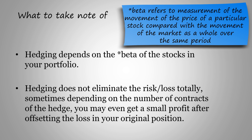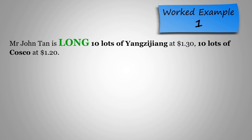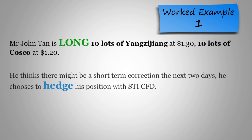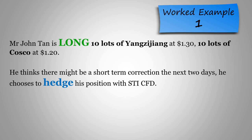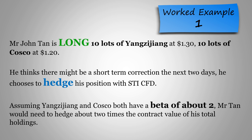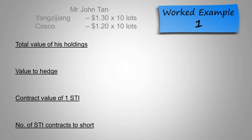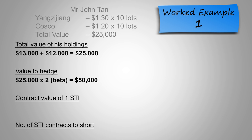Now, let us go through a few worked examples to show how hedging works in different situations. First, let's look at Mr. John Tan. Mr. John Tan is long 10 lots of Yang Zi Jiang at $1.30 and 10 lots of Costco at $1.20. He thinks there might be a short-term correction the next two days, and so he chooses to hedge his position with STI CFD. Assuming Yang Zi Jiang and Costco both have a beta of about 2, Mr. Tan would need to hedge about 2 times the contract value of his total holdings. Hence, the total value of his holdings would be $25,000. We find out the value to hedge by multiplying his total value with the beta, giving us $50,000.